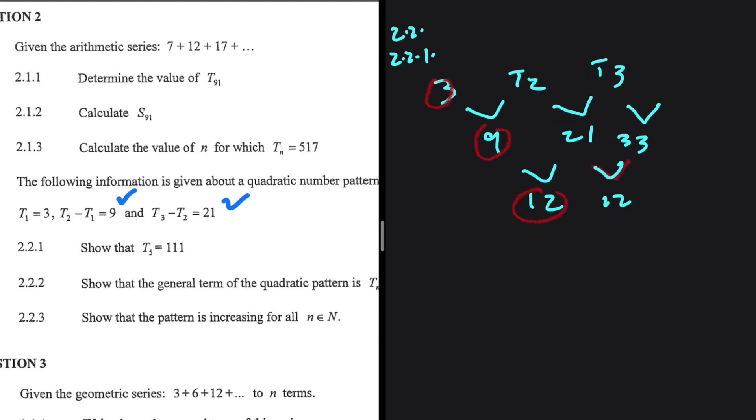3 plus 9 should give us T2. So 3 plus 9 is 12. So that is the value of T2. And then 21 plus 12 should give us T3. So 21 plus 12 is 33. So T3 is 33.